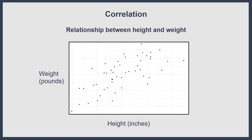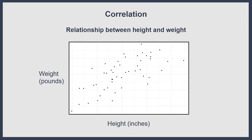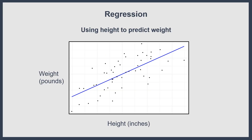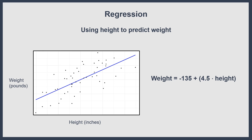A fourth thing statistics can do is allow us to find relationships between variables. Here we see the relationship between height in inches and weight in pounds, where each dot is a person. There's a positive relationship: people who score higher in height tend to score higher in weight. This is called a correlation. Statistics can also allow us to predict the level of one variable from another by fitting a line of best fit — this is called regression. Regression can even predict an outcome from many predictors, summarized in an equation.